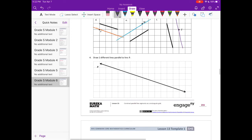And number 4, draw two different lines parallel to line B. I'm just going to line my ruler up with line B and move it down just a bit. So, there's one. And I'll draw one more. And there is lesson 13.